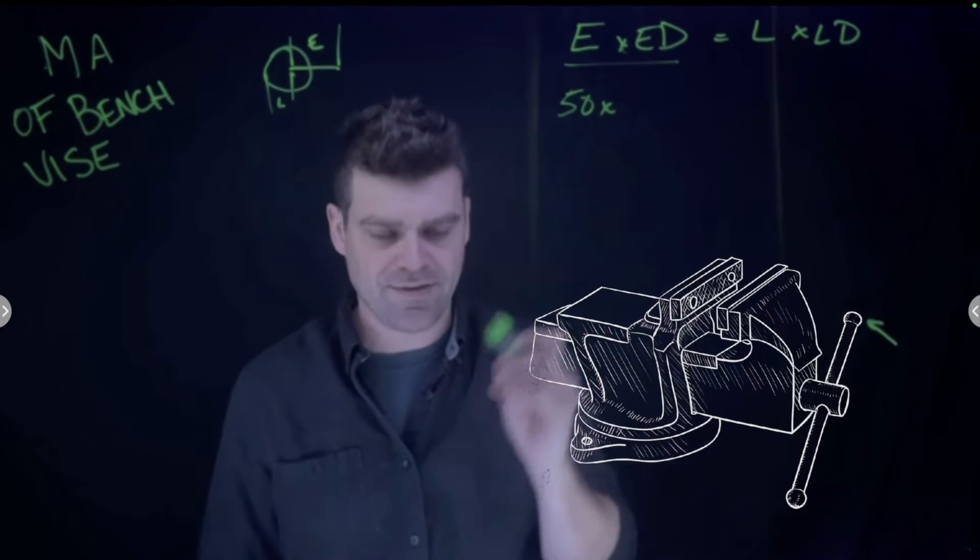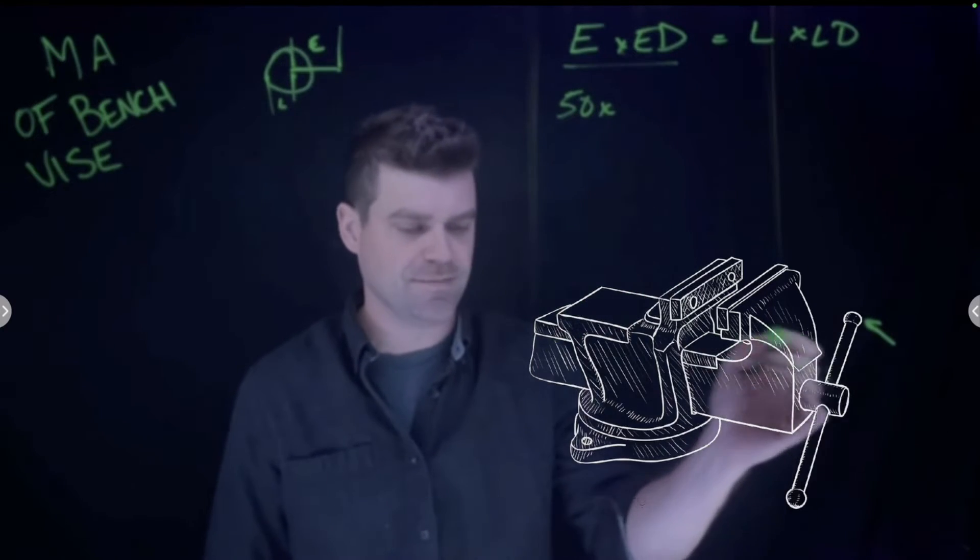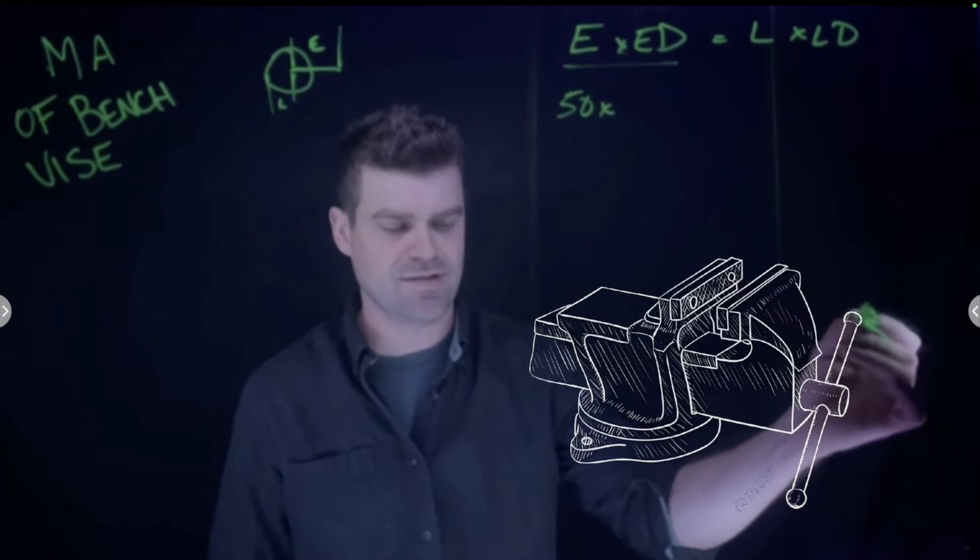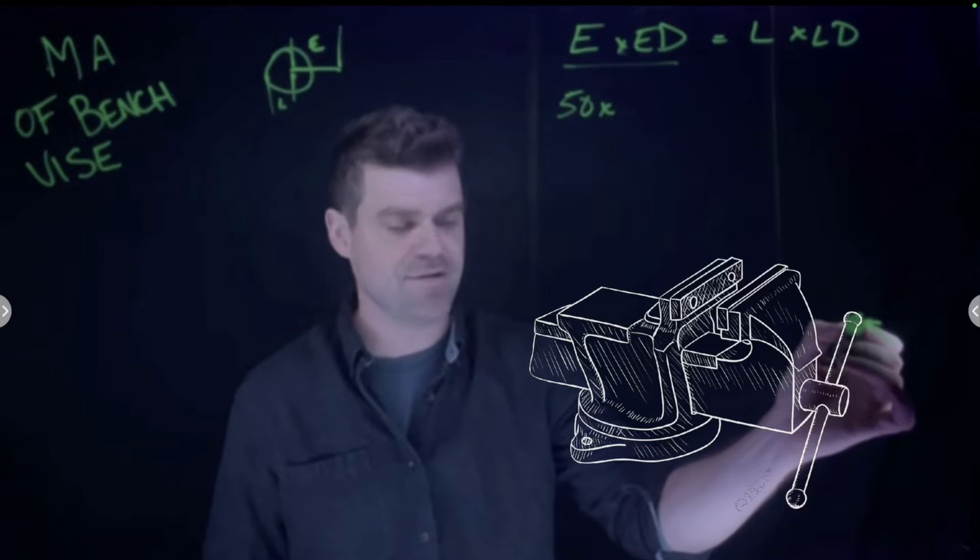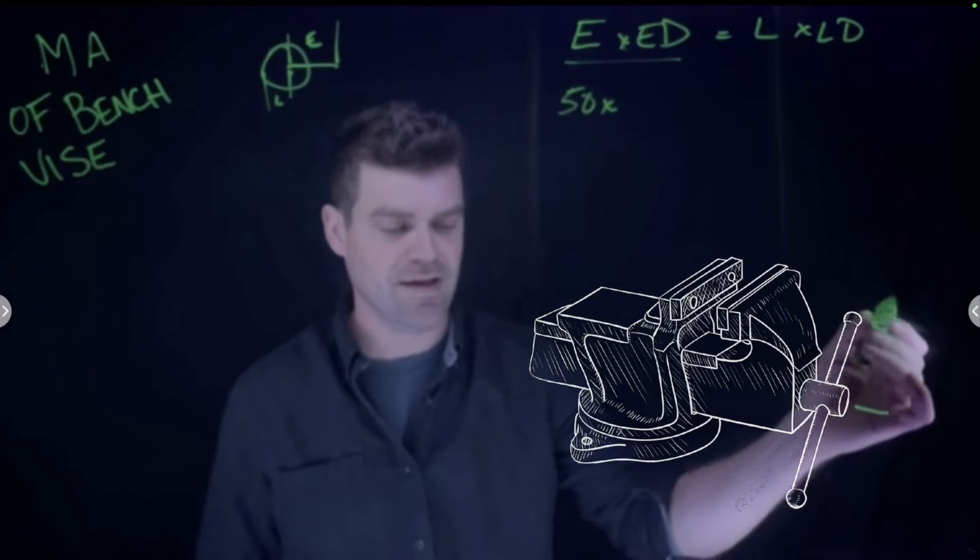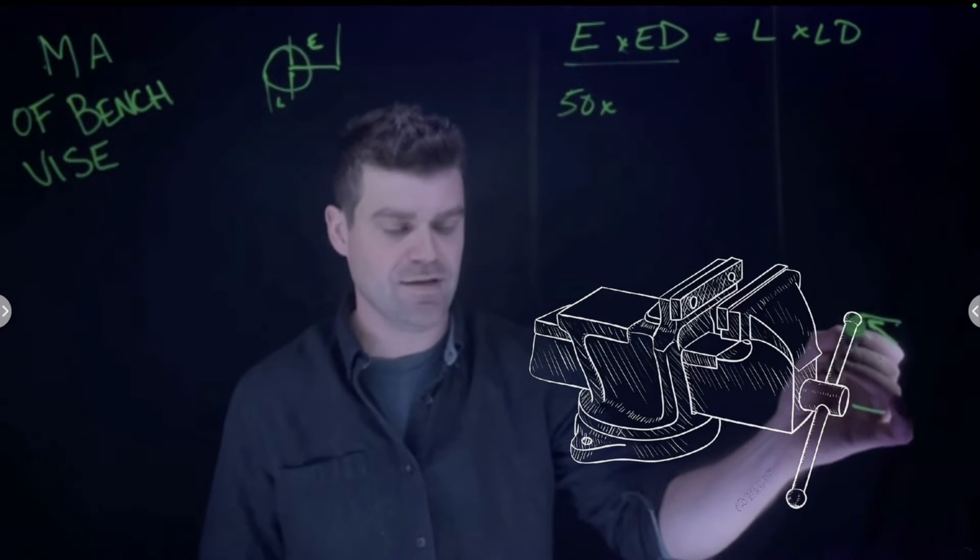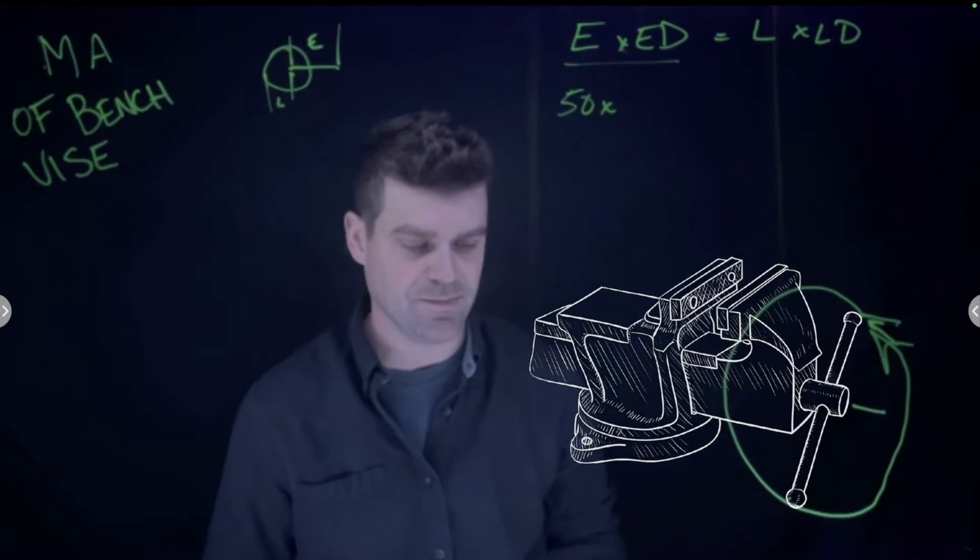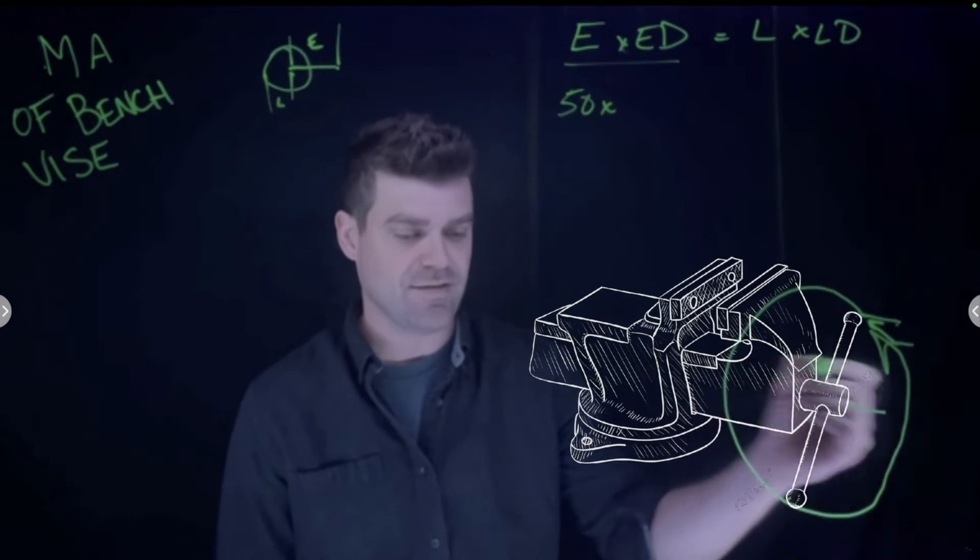The part that's different here is the effort distance. In this drawing, the handle is half retracted, but let's say it was extended all the way around. The effort distance isn't the distance from the end of the handle to here. The effort distance is actually the distance the handle travels all the way around and back to the beginning.